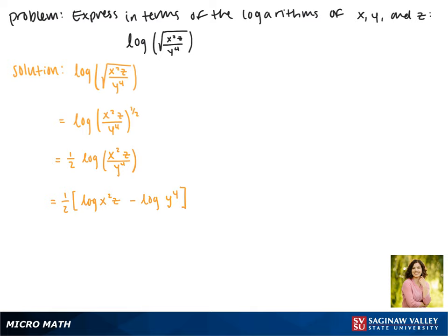Now since inside of the first term these are being multiplied we can break them up by addition, so this becomes one-half times the log of x squared plus the log of z minus the log of y to the fourth.